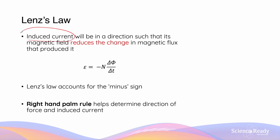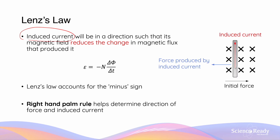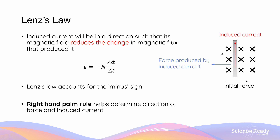Remember that any type of current will be able to produce its own magnetic field. So in the example we saw before, the induced current flowing through the straight conductor will be producing a circular magnetic field going around the conductor itself. Lenz's law says this magnetic field produced by the current will be in a direction so that it interacts with the external magnetic field to reduce the change in flux that produced the EMF in the first place. If we apply the right-hand palm rule on this induced current — our thumb points upwards, fingers pointing into the screen representing the magnetic field — our palm should be facing to the left of the screen. This represents the force generated as a result of this induced current. Notice how the force produced by the induced current is opposing the direction of the initial force that produced the movement of the conductor into the magnetic field in the first place.